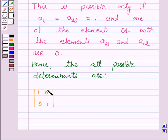Similarly we have 1, 1 and here in this determinant a21 is 1 and a12 is 0. Again we can have the determinant of the form 1, 1, 0, 1.